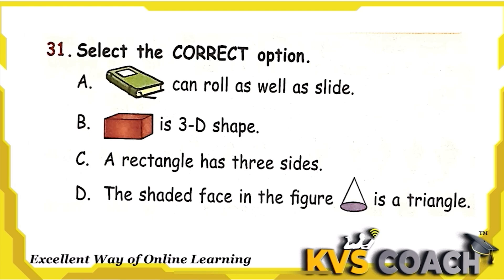The next question: select the correct option. Option A — a book can roll as well as slide: no, a book has a flat surface with no curve, so it cannot roll. Option B — a cuboid is a 3D shape: yes, this is correct. Option C — a rectangle has 3 sides: no, a rectangle has 4 sides. Option D — the shaded face in the figure is a triangle: no, the shaded face is a circle. Option B is the right answer.